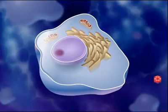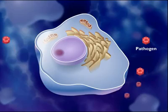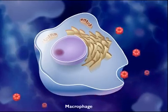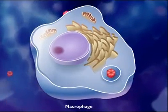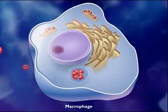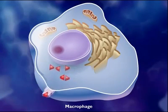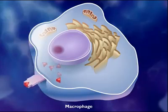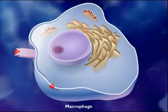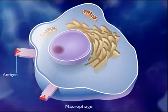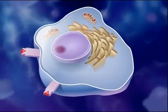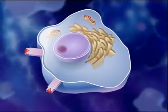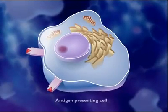Activation of the immune response typically begins when a pathogen enters the body. Macrophages that encounter the pathogen ingest, process, and display the antigen fragments on their cell surfaces. Macrophages with antigen fragments displayed on their surfaces are called antigen-presenting cells.